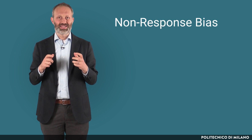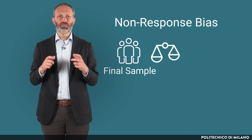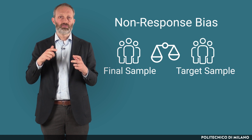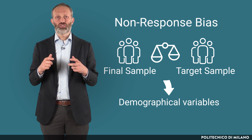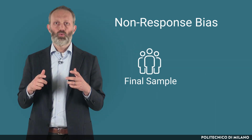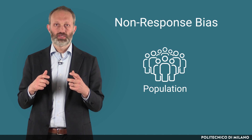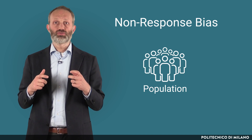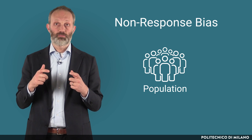Another mandatory control is to check the non-response bias. This is usually done by comparing the characteristics of the final sample with those of the target sample, or directly the population, considering demographic variables such as industry, size, age, geography, and so on. We want to be sure that our final sample is representative of the population, and therefore that non-respondents have not introduced a systematic bias to our random sampling.